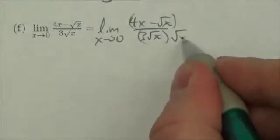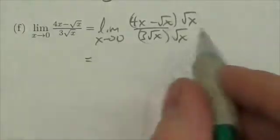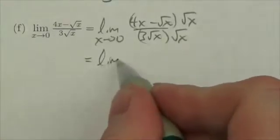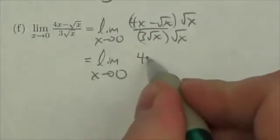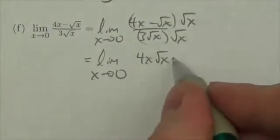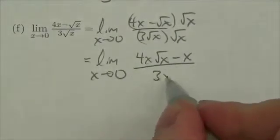So now I'm gonna multiply the numerator and denominator by root x. Hopefully this will fix my problem here. And if I do that, remember this is still the limit as x approaches zero. If I distribute that through I will get 4x root x minus x, all over 3x.